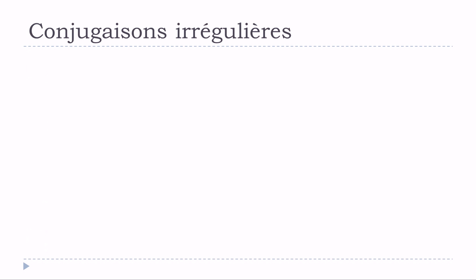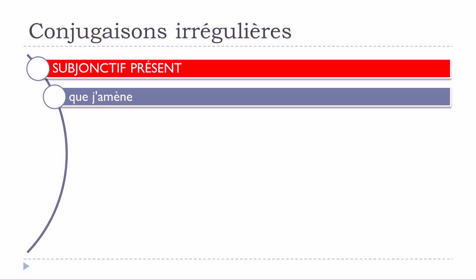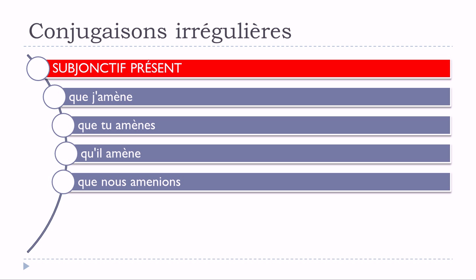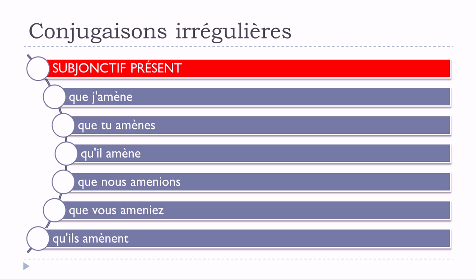And let's see the last one — le subjonctif présent. Que j'amène, que tu amènes, qu'il amène, que nous amenions, que vous ameniez, qu'ils amènent. We can see that the modification affects only je, tu, il, and ils at the plural form — the same accent grave on top of this E. For nous and vous, you don't touch it: amenions, ameniez.